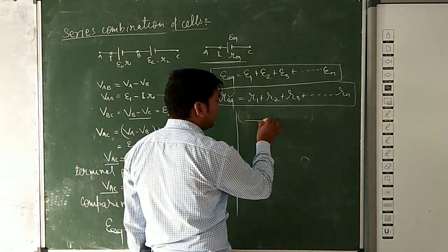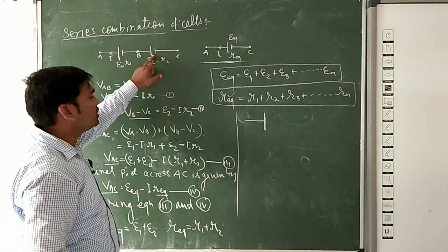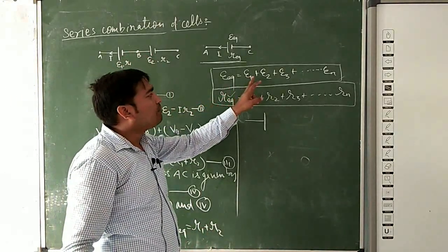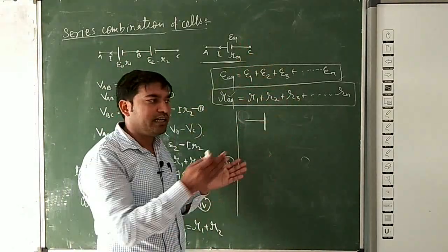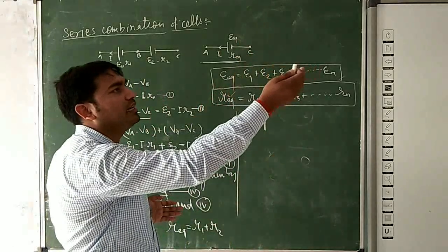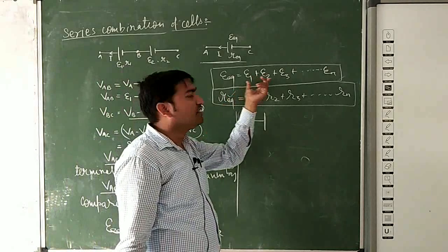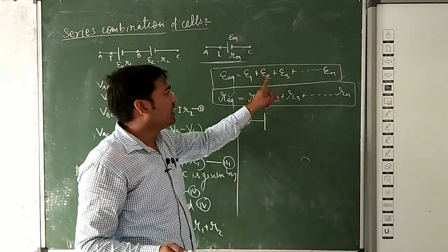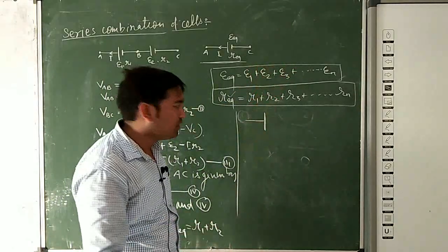A third important point: when the negative terminal of a battery is connected to the positive terminal of the next, the EMF keeps increasing — that is, the voltage increases. For example, a 2-volt battery and a 3-volt battery connected this way give a 5-volt battery.